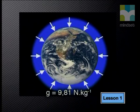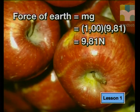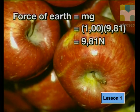On the Earth's surface, the gravitational field strength g is 9.81 newtons per kilogram. This means that we can calculate the force of the Earth on a one-kilogram packet of apples by taking its mass, one kilogram, and multiplying it by the Earth's gravitational field strength, g. So an object such as a one-kilogram packet of apples will be pulled towards the Earth with a force of 9.81 newtons.